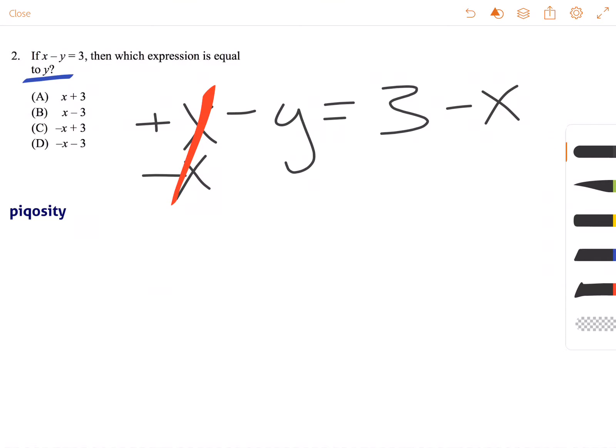So these cancel each other out, and our new equation is negative y is equal to 3 minus x.